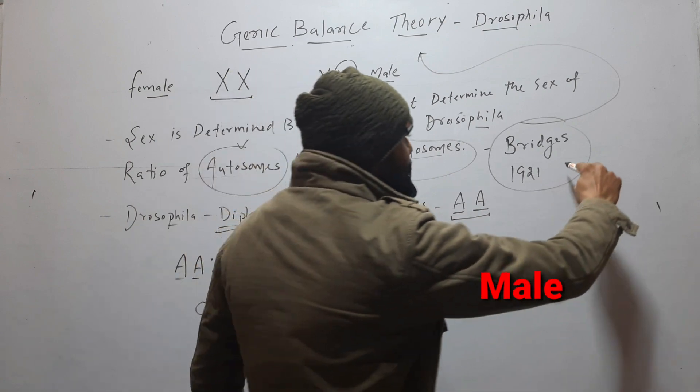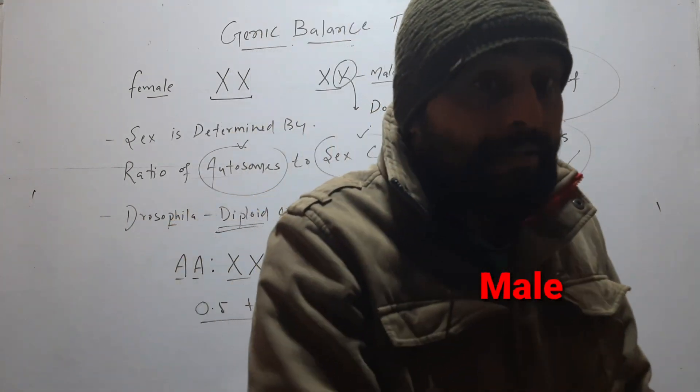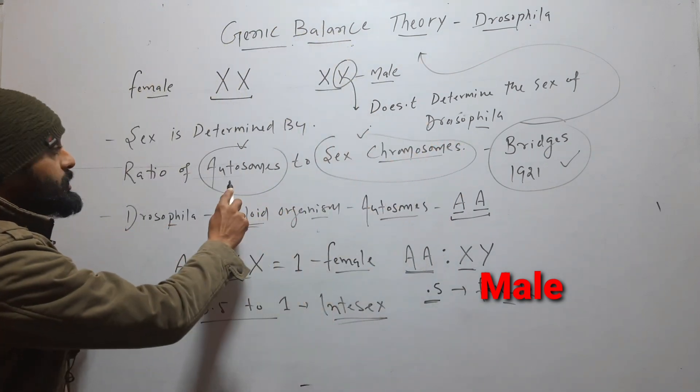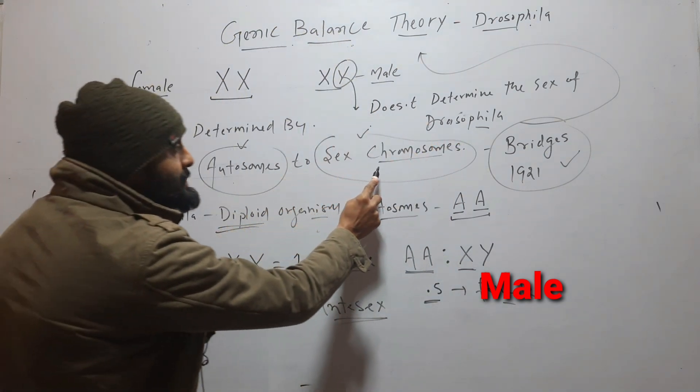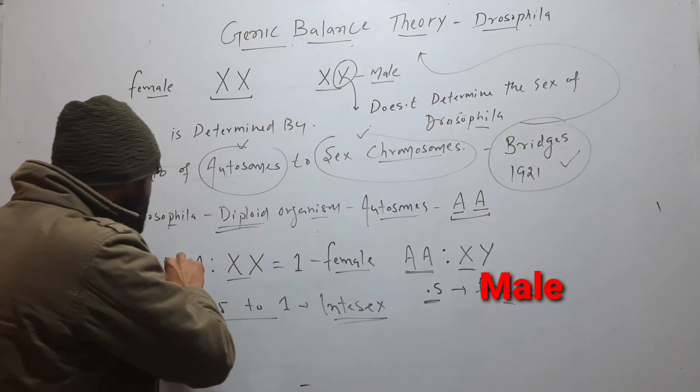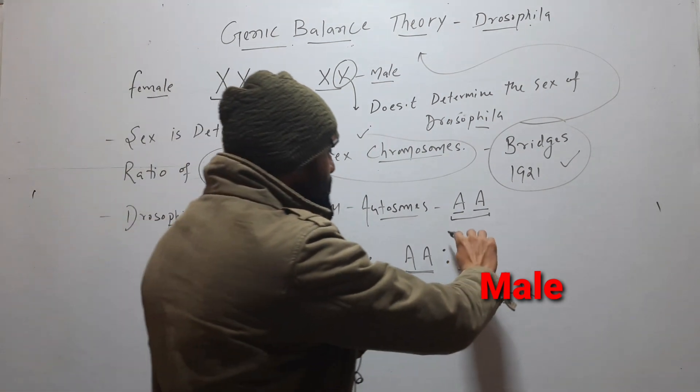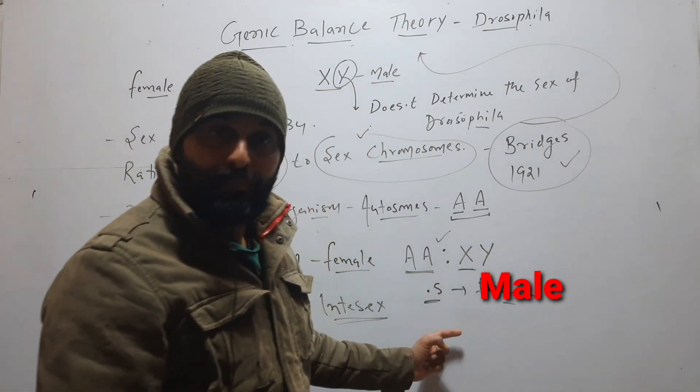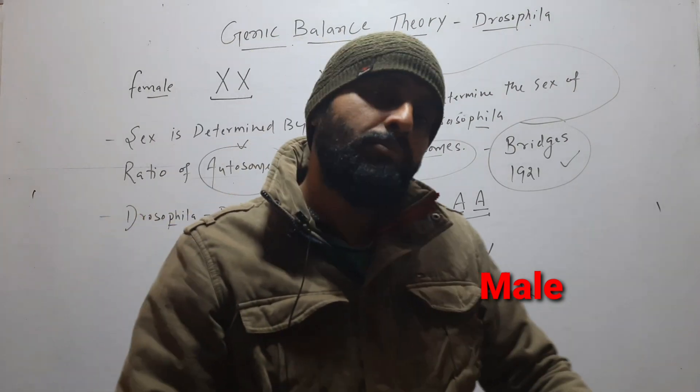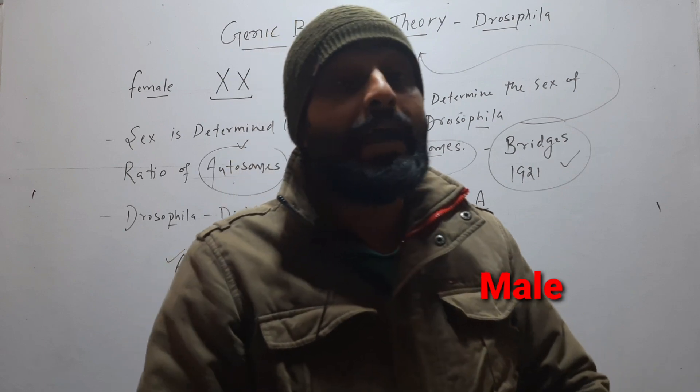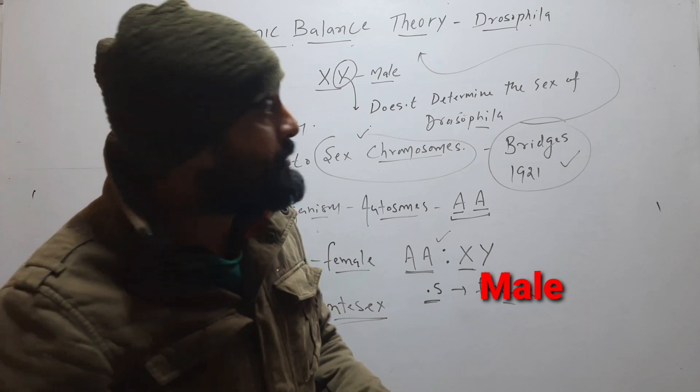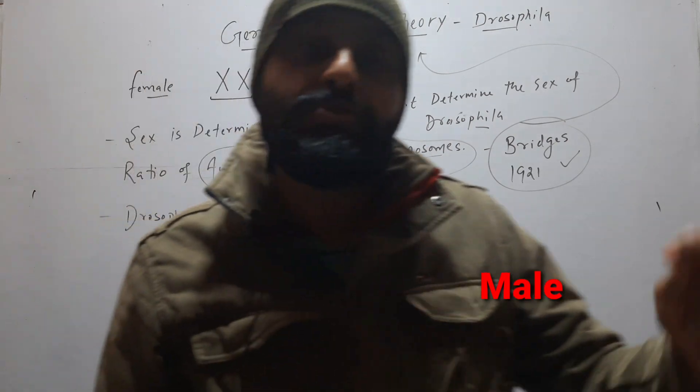This was discovered by Bridges and then on this finding, he gave theory of genic balance. Here ratio of autosome to the sex chromosome decides the sex of fruit fly. If it comes 1, then it is female. If it comes 0.5, then it is male. And if it is between 0.5 and 1, then it may have character of both male and female. Here Y is not important for sex determination. This is genic balance theory.